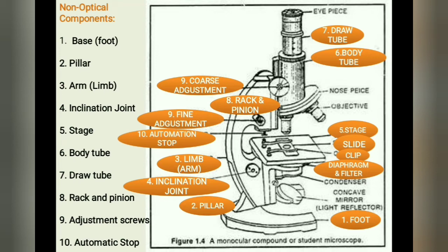The last non-optical part is the automatic stop — a small screw fitted at the lower end of the rack and pinion. It is meant for stopping the downward sliding of the body tube so as to prevent damage to the objective lens and the slide.